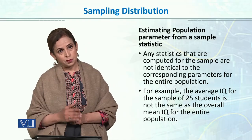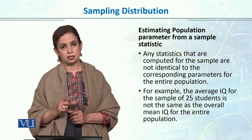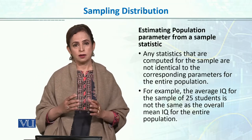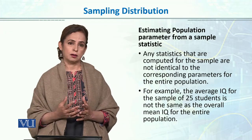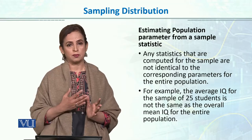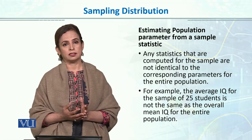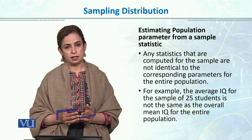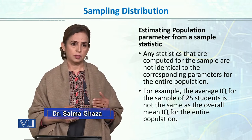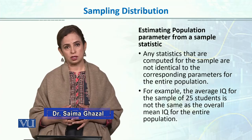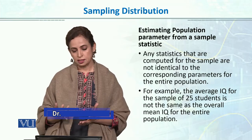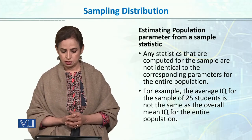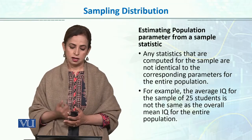When we take a sample and calculate the statistics — like mean, standard deviation, proportion — there will be a difference. There is a very rare chance that the sample statistic will exactly match the population parameter. There are more chances that it will be different. Sampling error is basically the difference between the mean of a sample and the actual mean of the population — the difference of sample statistic and population parameter.